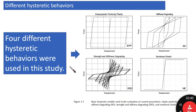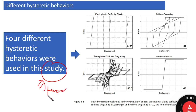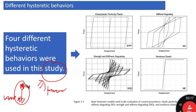We have four different hysteretic behaviors used in the study referenced in FEMA 440. Simply put, the study applies earthquakes with different intensities to a single degree of freedom system with different hysteretic models, and we observe the effect of the hysteretic model on the maximum response of the system. We have a bunch of earthquakes and four different types of hysteretic models, and we will provide insights on how much effect each model has.